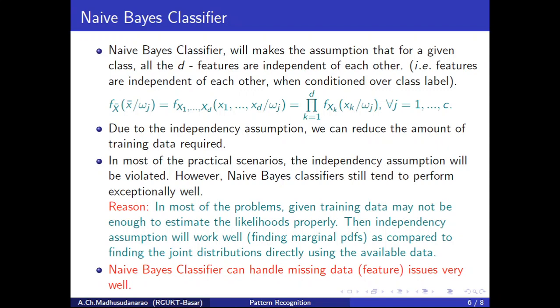Naive Bayes classifier can handle missing data issues very well. If there is any missing feature in your training data, that can be neglected — no need to worry about it. For example, if you have 10,000 training samples and around 50 training samples are missing the first feature x1, with the help of the remaining 9,950 samples we can still estimate the marginal PDF for x1. No need to consider all 10,000 samples. That is the beauty of the Naive Bayes classifier.